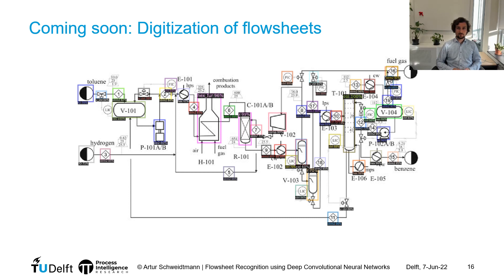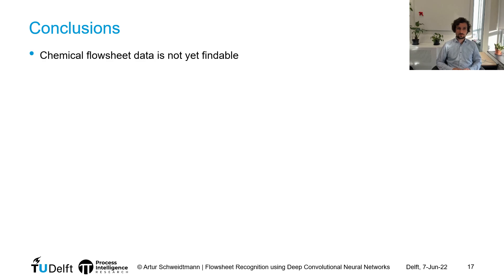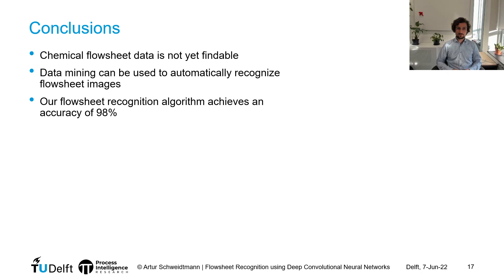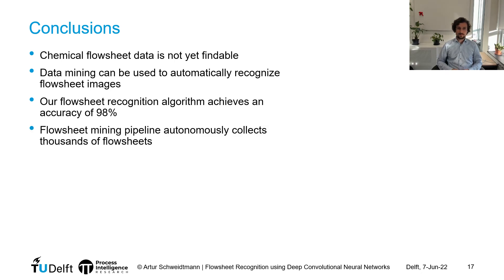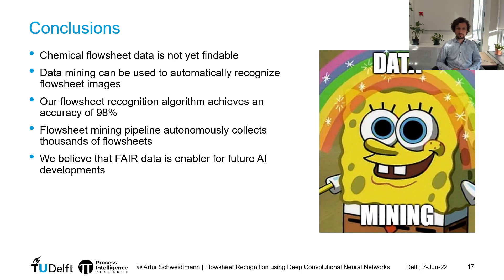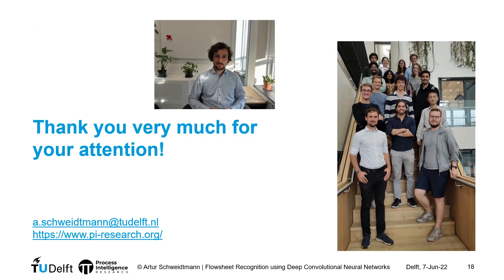In conclusion, what I showed you today is that chemical flowsheet data is currently not findable — and not FAIR in the FAIR data sense. Data mining can be used to automatically recognize flowsheet images, and the algorithm achieves a very high accuracy of 98%. This flowsheet mining pipeline collects thousands of flowsheets, and we believe that making chemical flowsheet data FAIR is an enabler technology for future AI developments. Thank you very much for your time and attention — I'm happy to answer questions in the session.